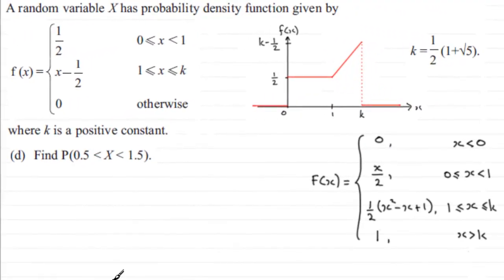Now in this next part, part D, what we've got to do is find the probability that the random variable X lies between 0.5 and 1.5.